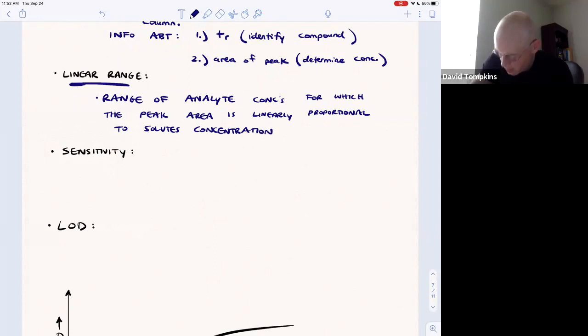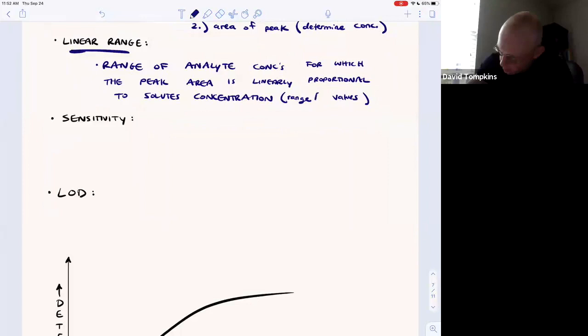You'll provide it as a range of x values on the plot that we discussed next or a range of concentrations. Brackets indicate concentration.